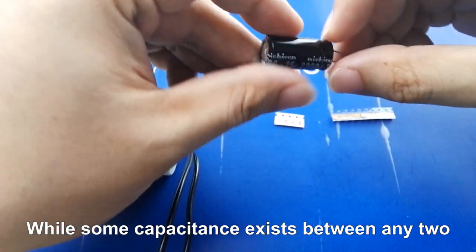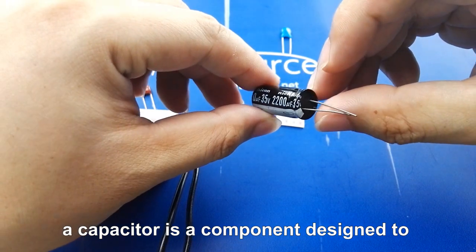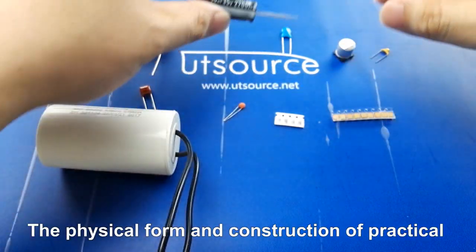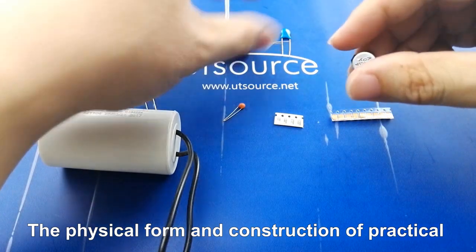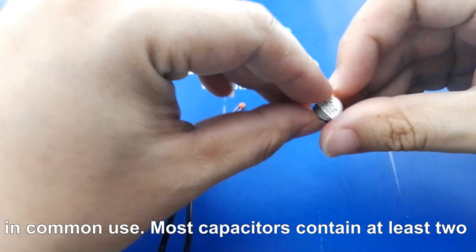While some capacitance exists between any two electrical conductors in proximity in a circuit, a capacitor is a component designed to add capacitance to a circuit. The physical form and construction of practical capacitors vary widely and many capacitor types are in common use.